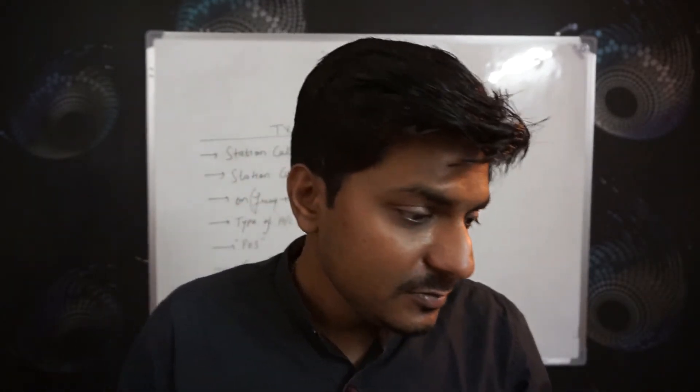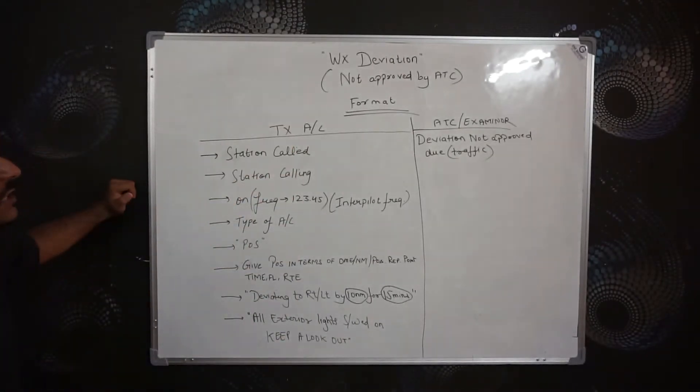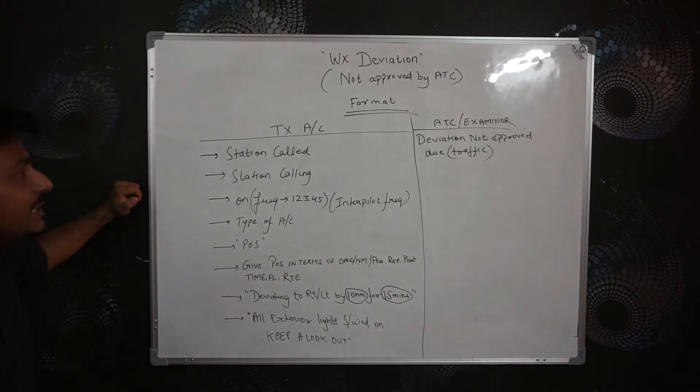I will be discussing how to communicate with the traffic in this part, continuing the same example and flight plan from the second-last weather deviation video. That was the first case where ATC gave clearance; today's video covers the second case where ATC does not give approval.